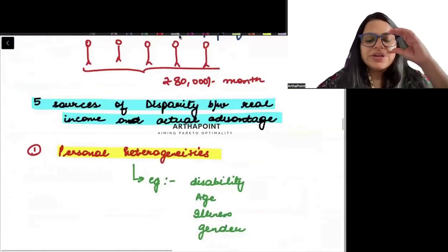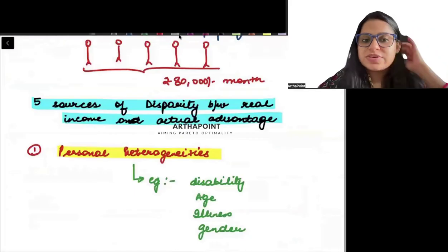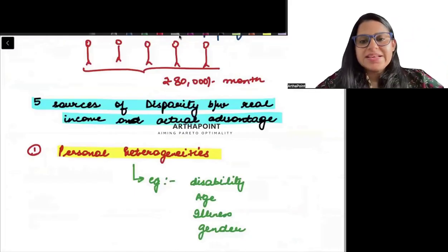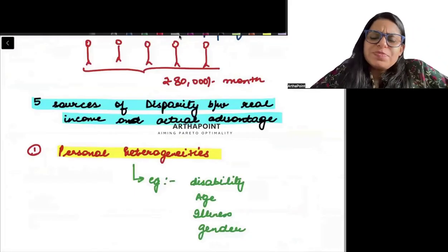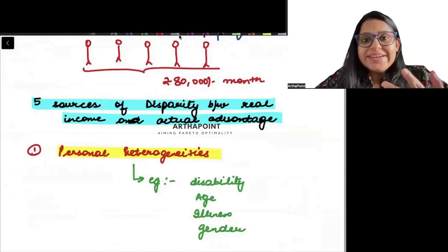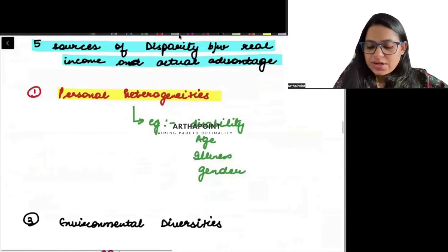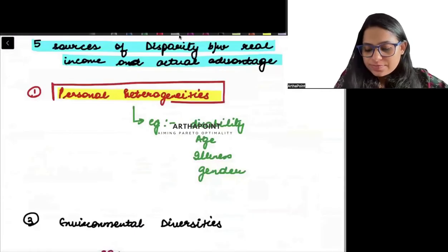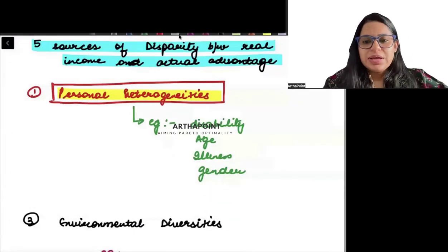Now we want to go ahead and talk about the five sources of disparity that exist. Why disparity exists? The first reason is personal heterogeneity. This example I always give students that, yesterday also, in the last class also, I gave you this example of